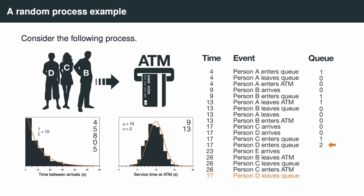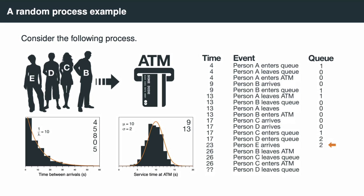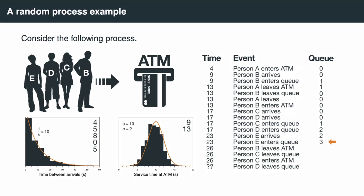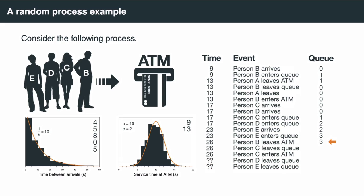We update the tally of the queue to 2. We note when Person D can leave the queue, but we don't know yet because we don't know what the subsequent distribution draws will be for people entering the ATM. The simulation moves to the next event: Person E arriving at time 23. This triggers Person E to enter the queue at exactly the same time. The queue tally gets updated, but we don't yet know when Person E will leave the queue due to the randomness still to be resolved.